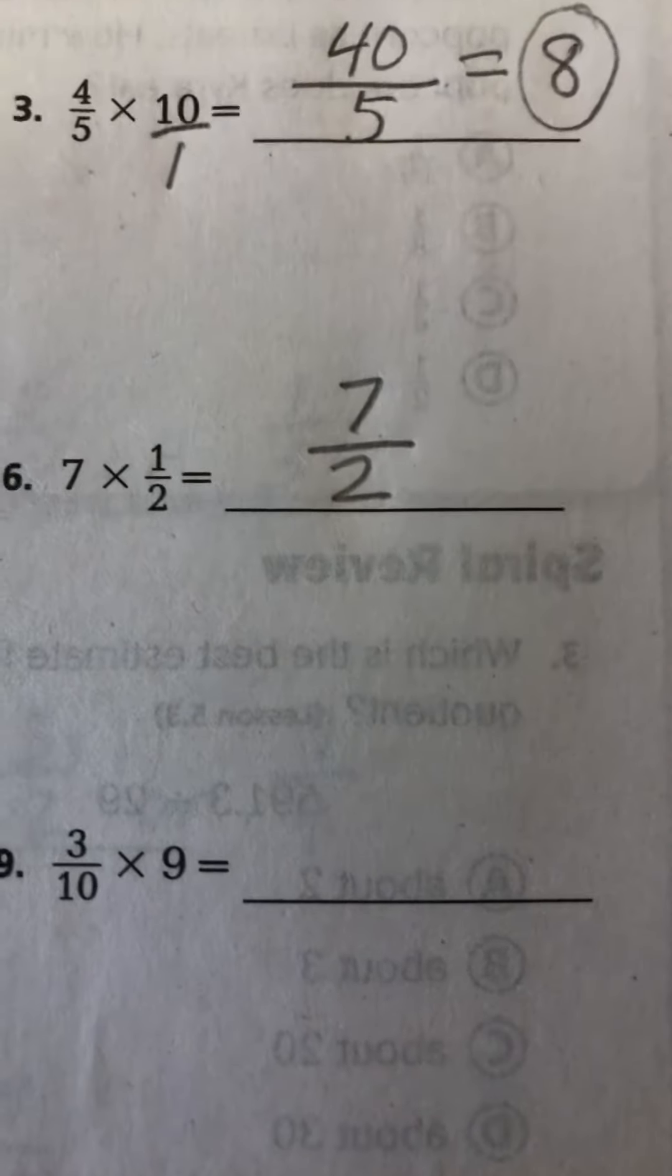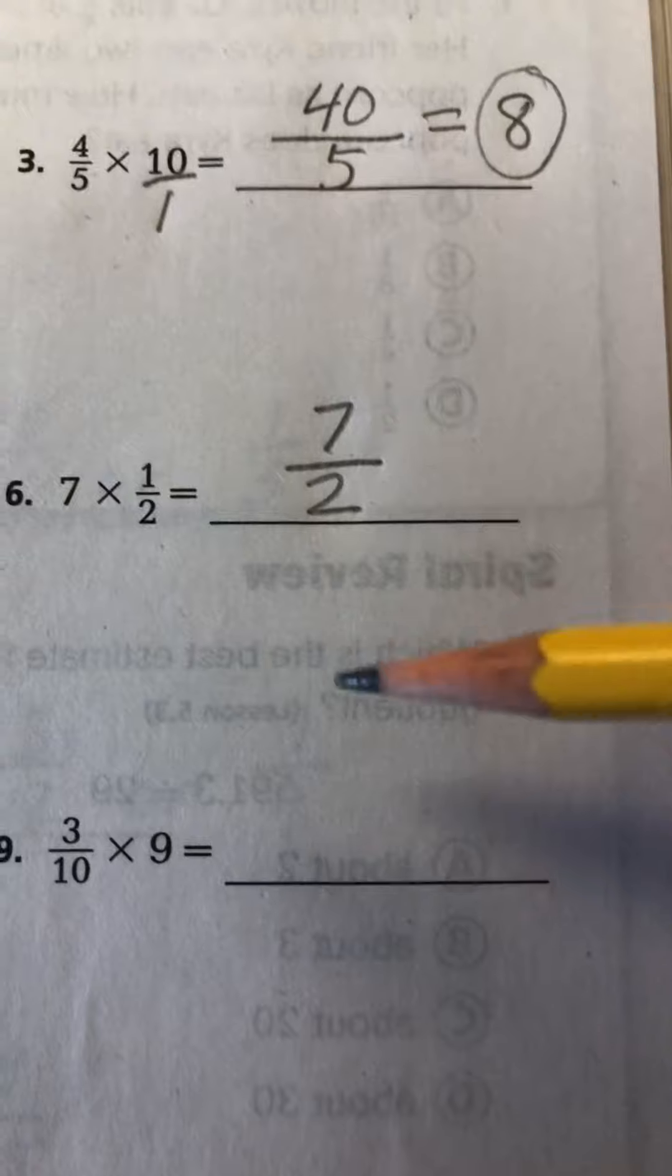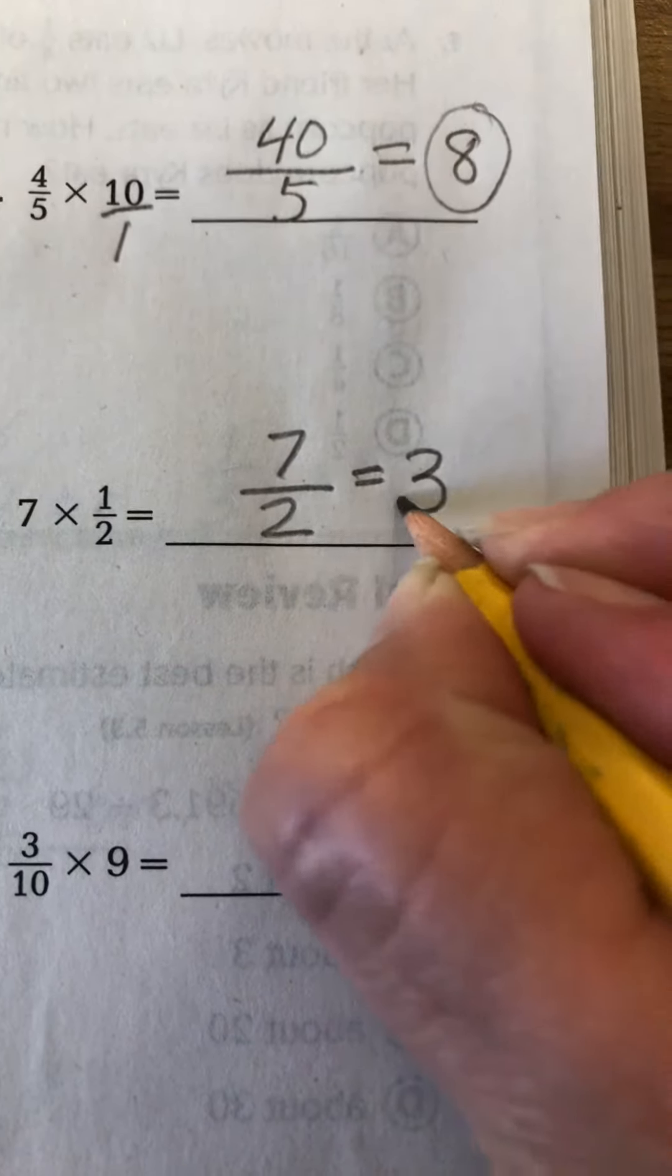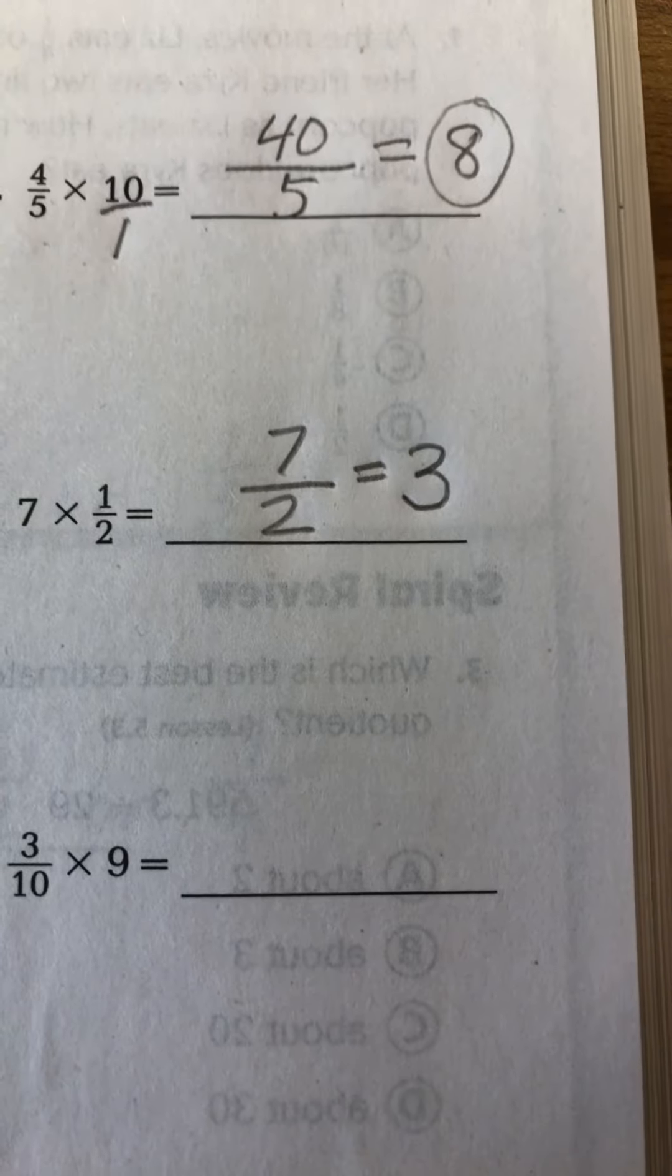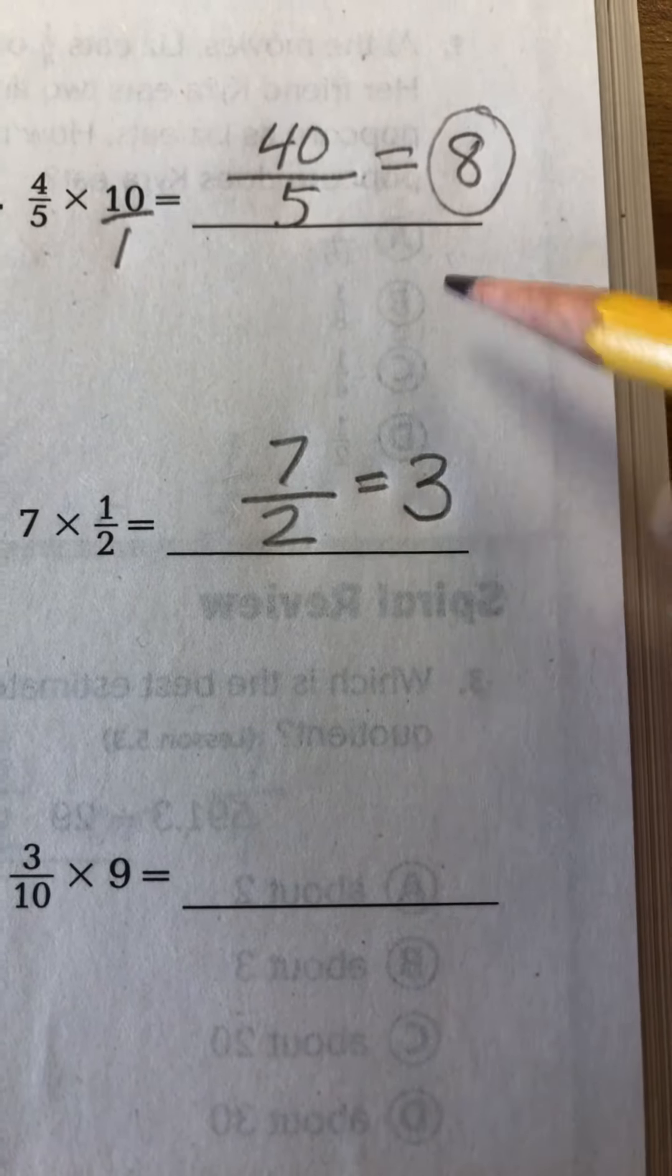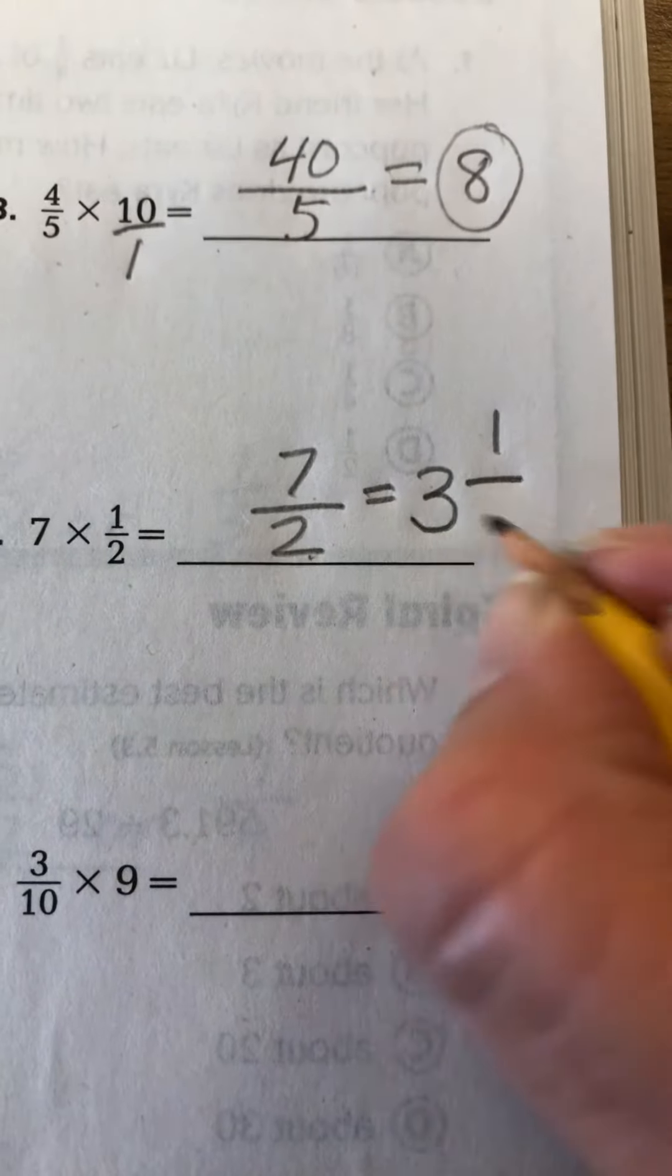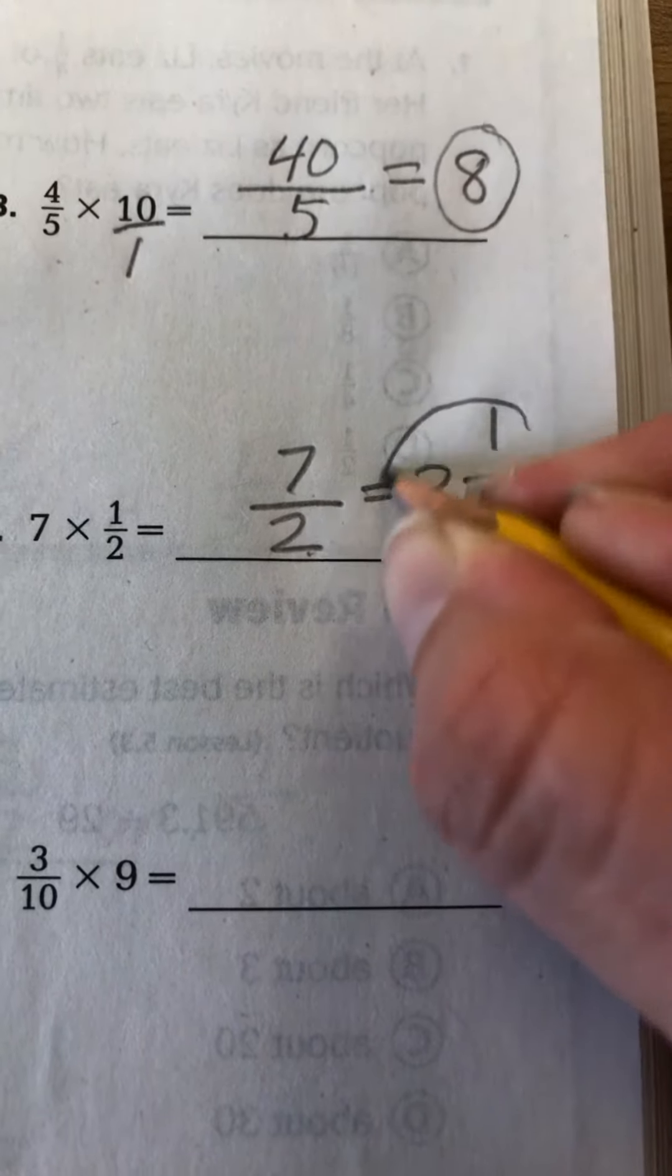So you're going to want to convert it to a mixed number. 2 goes into 7 three times. Because 2 times 3 is 6. And when you're at 6 to get to 7, it's a difference of 1. So 1 becomes your numerator. And your denominator stays the same. 3 and a half.